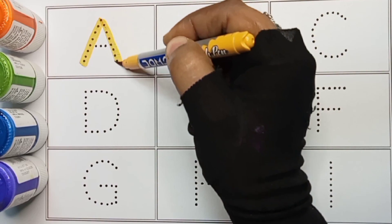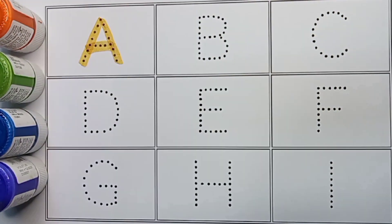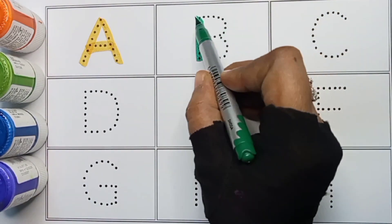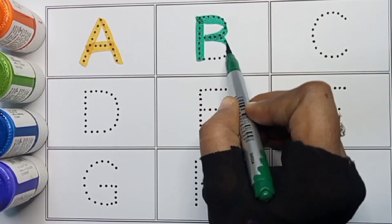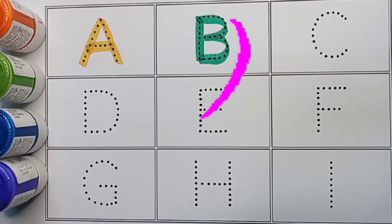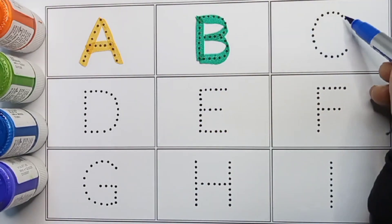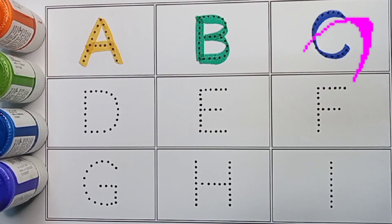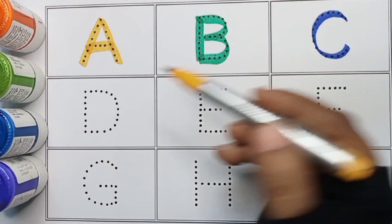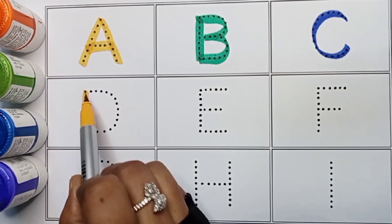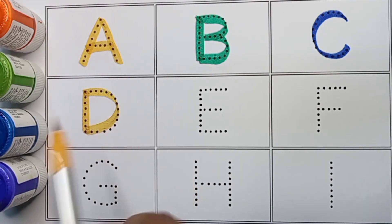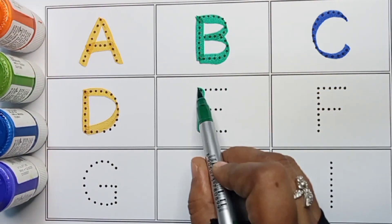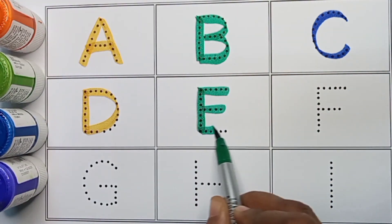A. A for apple. Green color. Blue color. B. E. Cat. Yellow color. D. Green color. E. E for elephant.